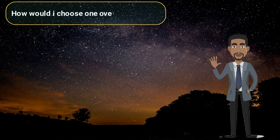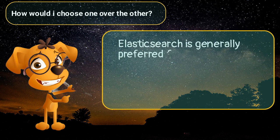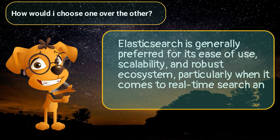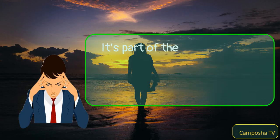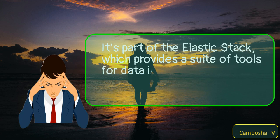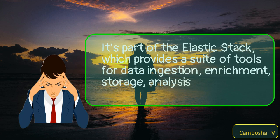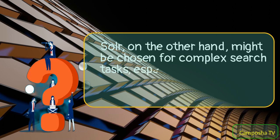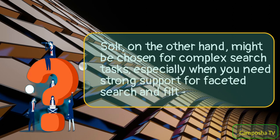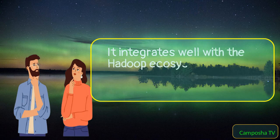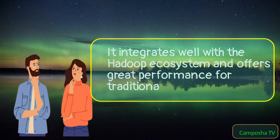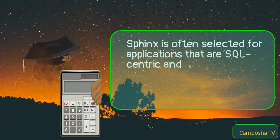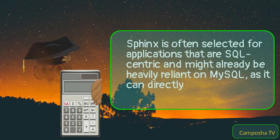How would I choose one over the other? Elasticsearch is generally preferred for its ease of use, scalability, and robust ecosystem, particularly when it comes to real-time search and analytics. It's part of the Elastic stack, which provides a suite of tools for data ingestion, enrichment, storage, analysis, and visualization. Solr might be chosen for complex search tasks, especially when you need strong support for faceted search and filtering. It integrates well with the Hadoop ecosystem and offers great performance for traditional search applications. Sphinx is often selected for applications that are SQL-centric and might already be heavily reliant on MySQL, as it can directly integrate with MySQL databases.